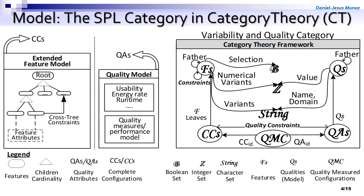On the right side, we can see the variability and quality category. In our framework, we can find five defined objects. I recall that categories are formed by objects and arrows. There are also three domains: the Boolean, the integer set, and the string set. From the upper objects, we have the features object and the qualities object. Below, a set of features is the complete configuration object CCS. Likewise, a set of qualities is the configuration-level variant-wise quality attribute object QAAs.